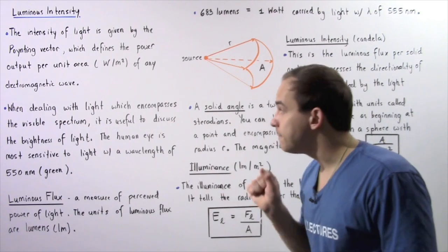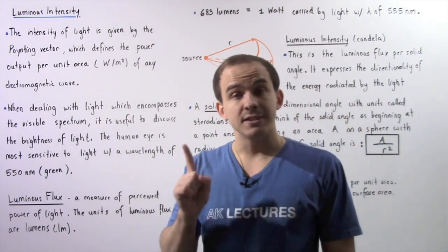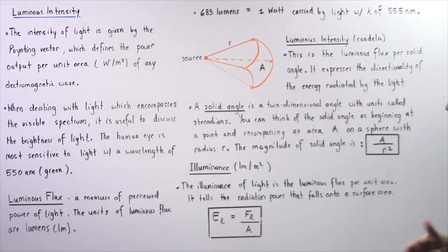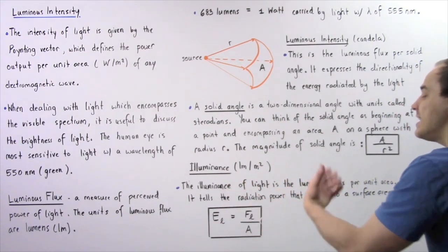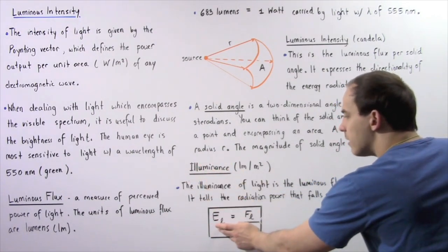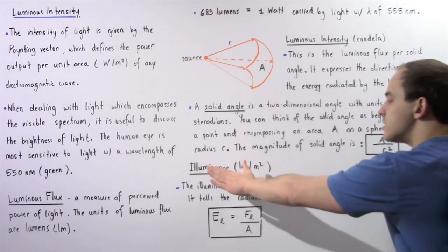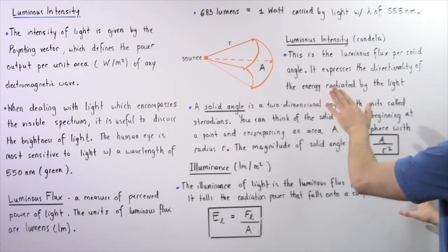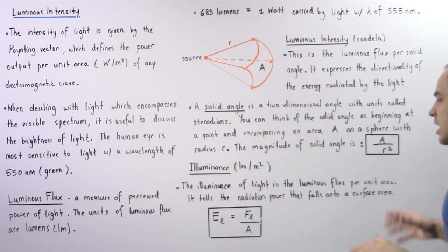The third and final quantity that describes the brightness of light is the illuminance. It is defined as the luminous flux per unit area on which the light falls. The units are lumens divided by meters squared. This tells us the radiation power of light that falls onto a surface area, and it is given by the equation: illuminance equals the luminous flux F subscript L divided by the area. Notice that illuminance is not exactly the same thing as luminous intensity — luminous intensity tells us the directionality of the energy radiated by the light.